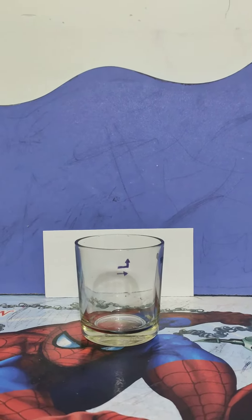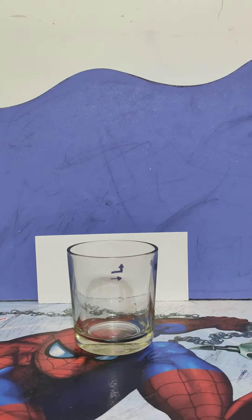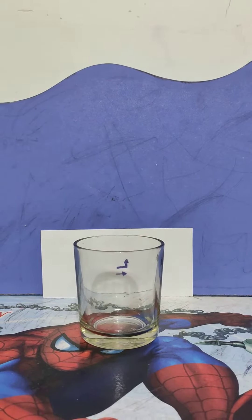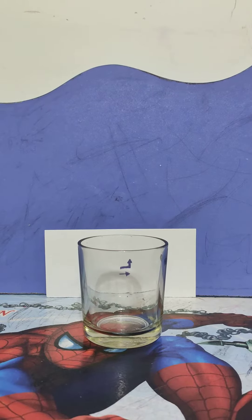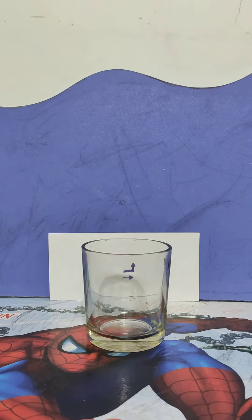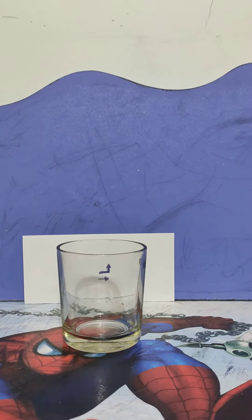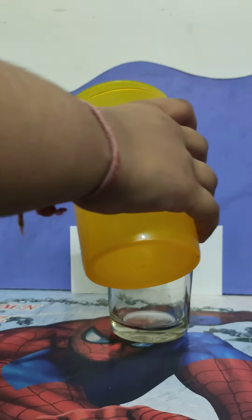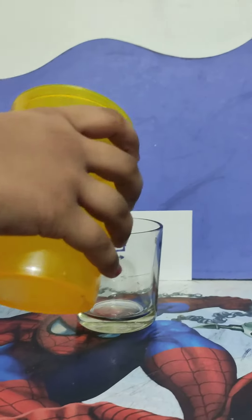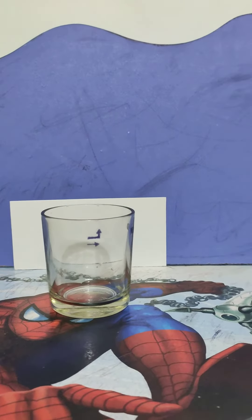So you can see that arrow on the paper is facing on the right side of my hand. And now we are going to pour some water in the glass, Rasi pour some water in the glass. You will see the inversion image through that water.